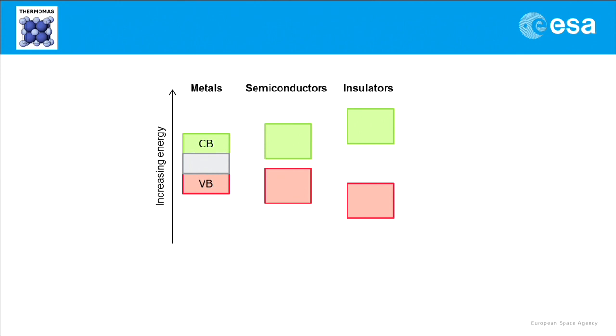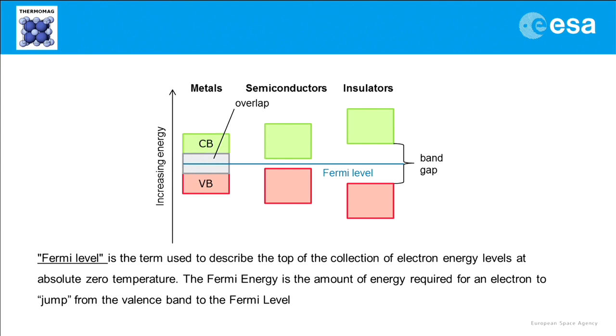Here it's also important to introduce the concept of a Fermi level. Fermi level describes the top of the collection of electron energy levels at absolute zero temperature. In other words, it's a hypothetical energy level which has 50% probability to be occupied or free at thermodynamical equilibrium in any given moment.